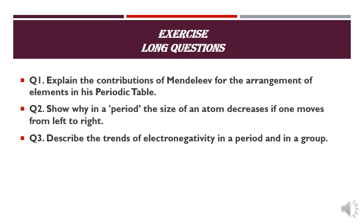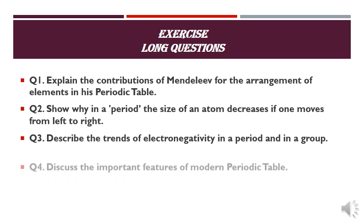Describe the trends of electronegativity in a period and in a group. Electronegativity has been discussed in the week's lecture. There you have the definition, the trend in periods and groups, with examples, diagrams, and complete answers. You must write it with headings — the book has this material but you must write it with proper headings.